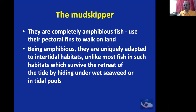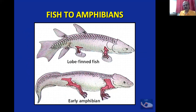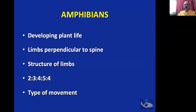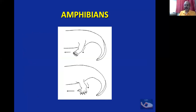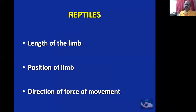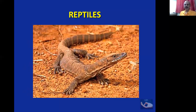These fish don't need to hide under wet seaweed — they can walk on land. So this is how the lobe-finned fish went on to become the early amphibians, and from early amphibians it was a short step to become reptiles. Because developing plant life was on land, they started moving ashore. The limbs became perpendicular to the spine, and they could use all four limbs to walk — like the alligator or crocodile. Then came the reptiles, with changes in limb length, limb position, and direction of force of movement.